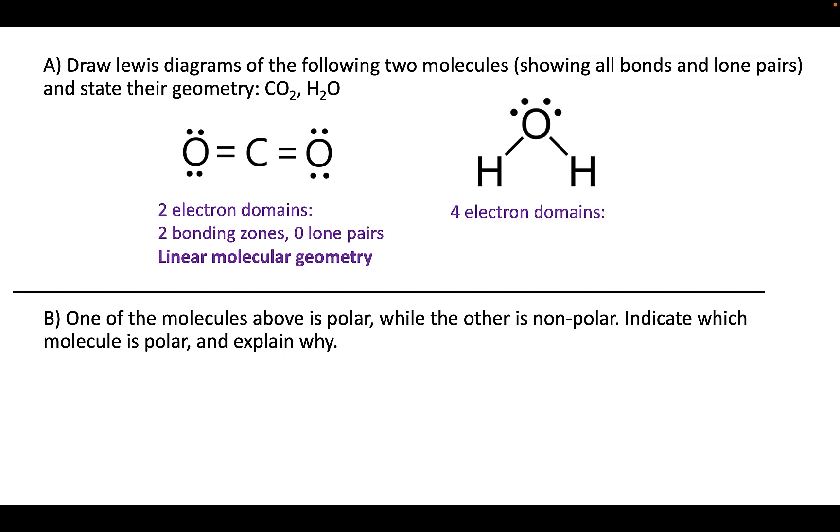In contrast for water we have four electron domains. There's two lone pairs and two bonded pairs. This makes for a geometry that's actually going to be bent in this case. Water has a bent geometry, carbon dioxide has a linear geometry, and that's the answer to part A.